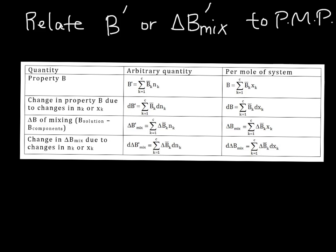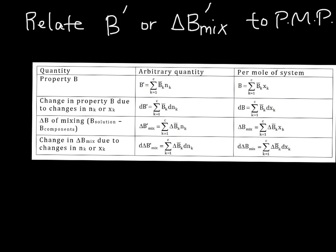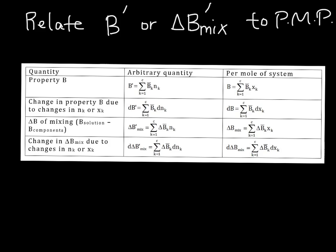This table shows how we can do that, and you'll get a copy of this in class, so don't worry about writing all of this down. What this table shows over here is how we can calculate the property B, so that would be like this guy right here. The first column is for an arbitrary quantity, so you'll notice that we have B with the little apostrophe there, or per mole of the system over here, and so we just have B without it.